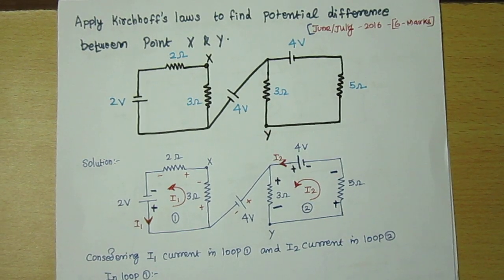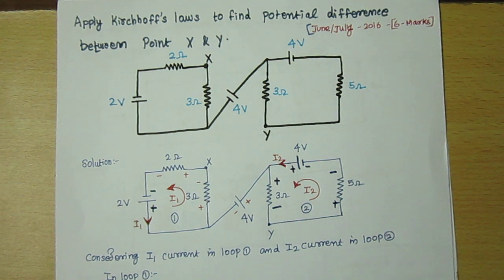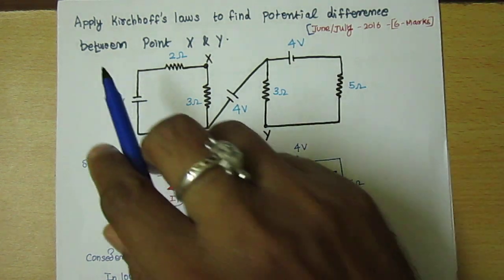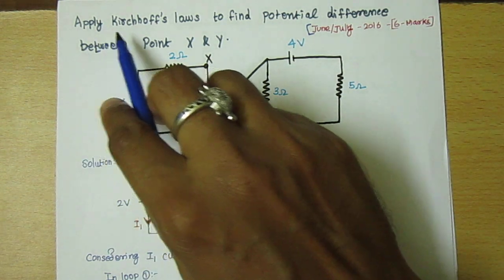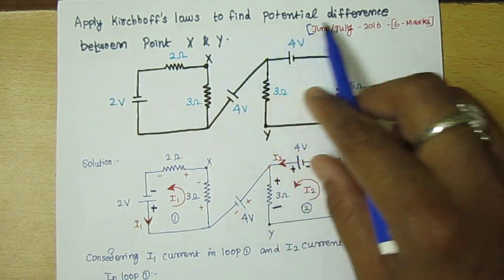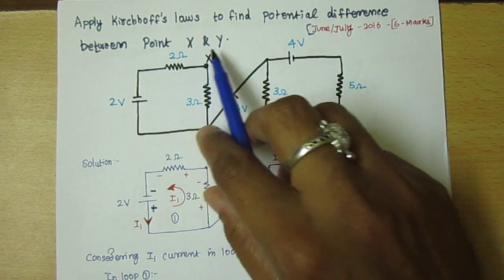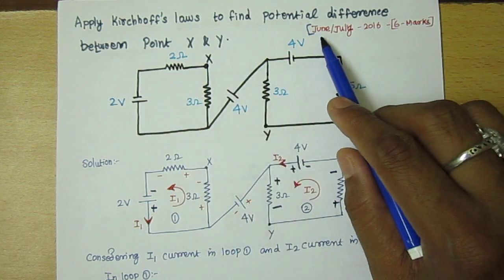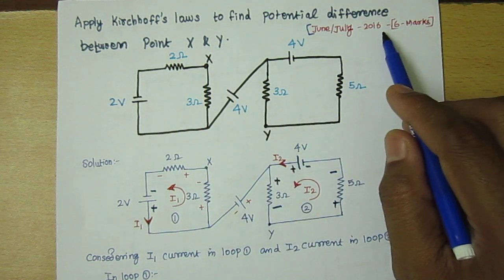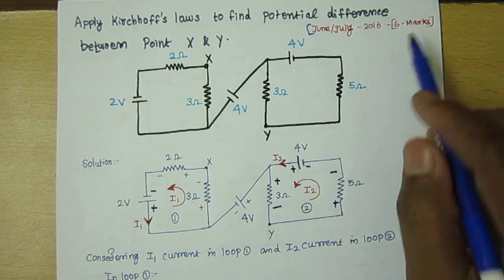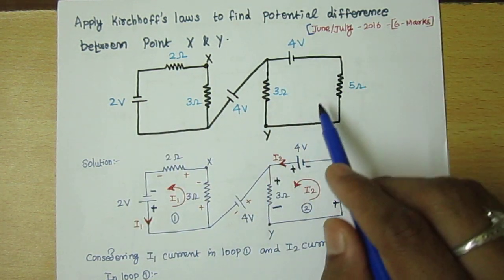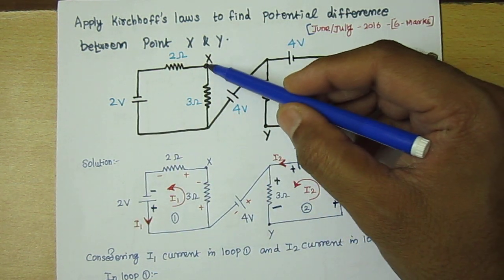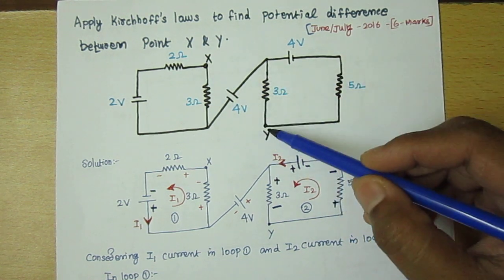Hello everyone, welcome to today's session. Today we are going to discuss Kirchhoff's current law and voltage law numerical problems which were asked in the VTV exam. The question is: apply Kirchhoff's law to find the potential difference between point X and Y. They asked this question in June-July 2016 for six marks. For this given network, we have to find the potential difference between point X and Y.